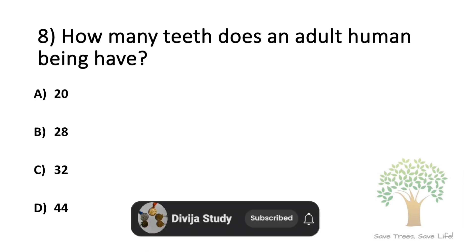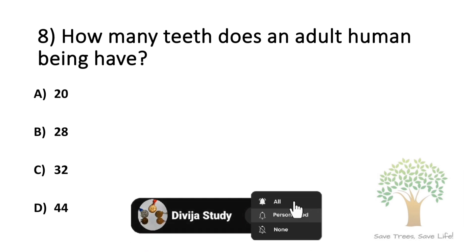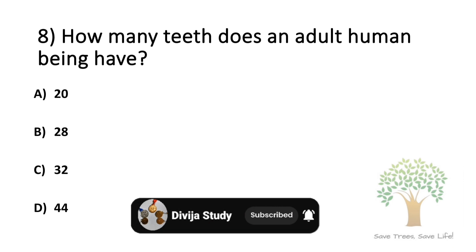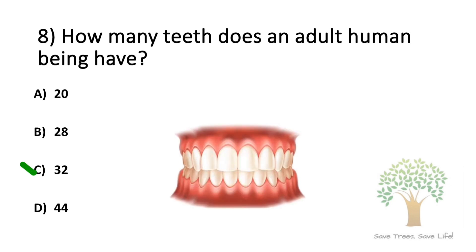Question number 8. How many teeth does an adult human being have? Option A: 20. Option B: 28. Option C: 32. Option D: 44. The answer is Option C, 32.